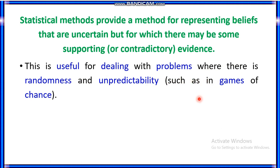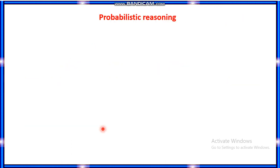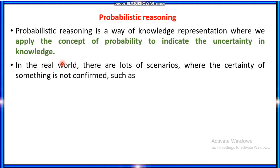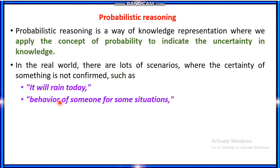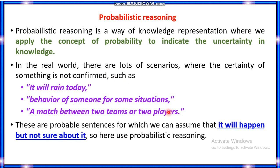This can be seen in examples like games of chance and probabilities. To do all this in a principled way requires techniques for probabilistic reasoning. Probabilistic reasoning is a way of knowledge representation where we apply the concept of probability to indicate the uncertainty in knowledge. In the real world there are lots of scenarios where the certainty of something is not confirmed, such as whether it will rain today, the behavior of someone in certain situations, or a match between two teams or two players. These are probable sentences for which we can assume something will happen but are not sure about it.